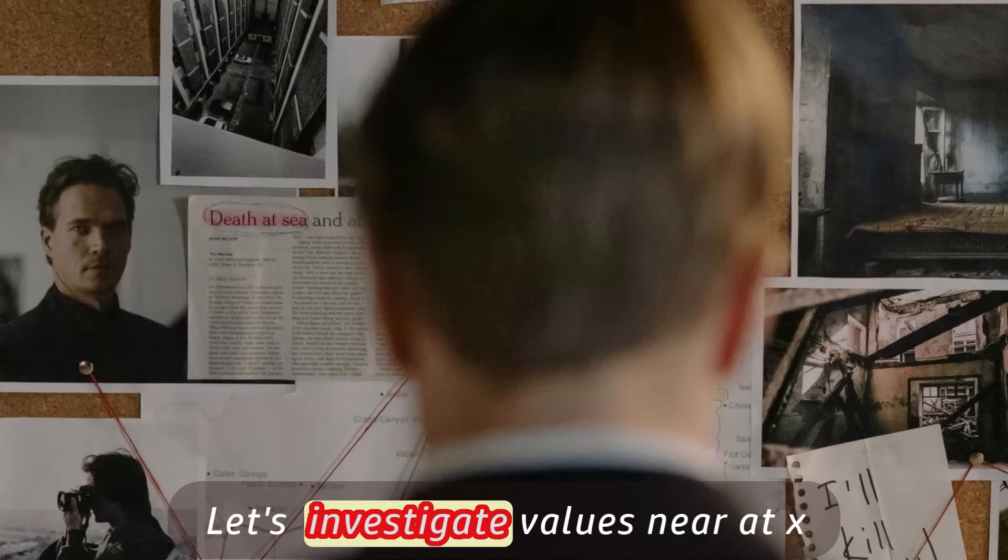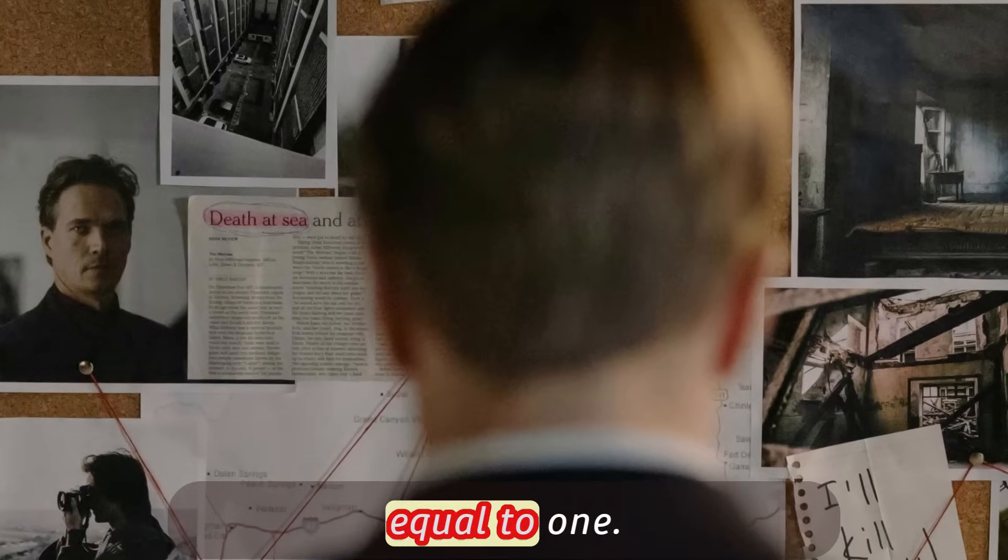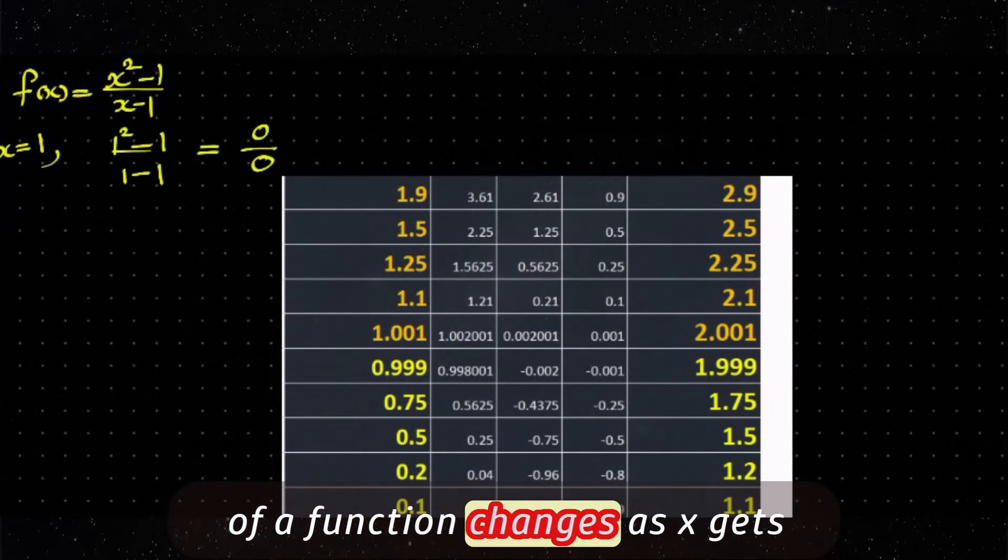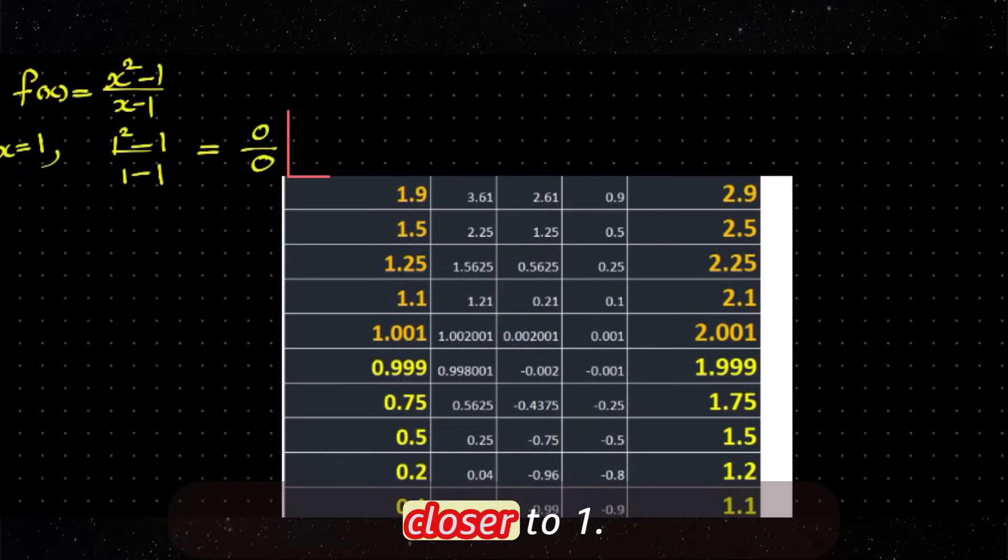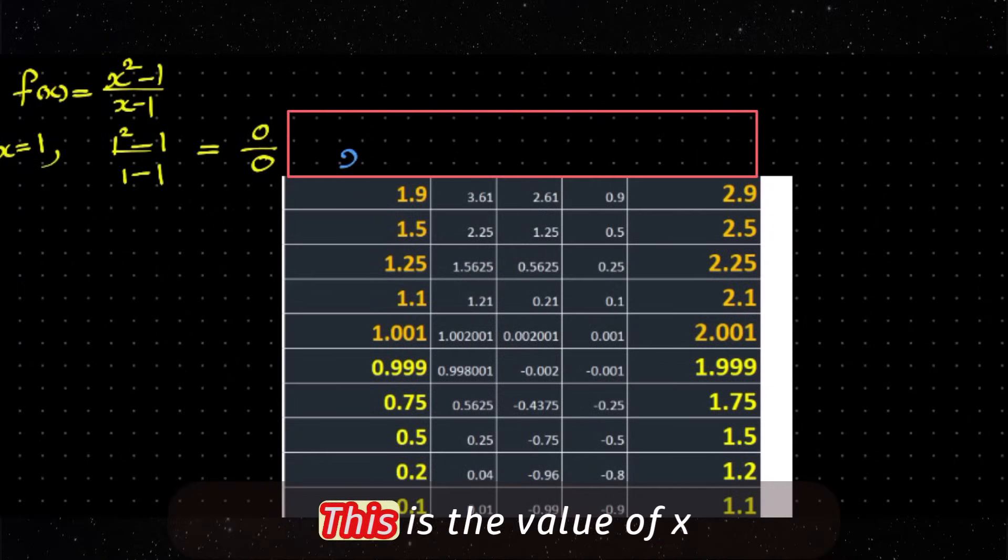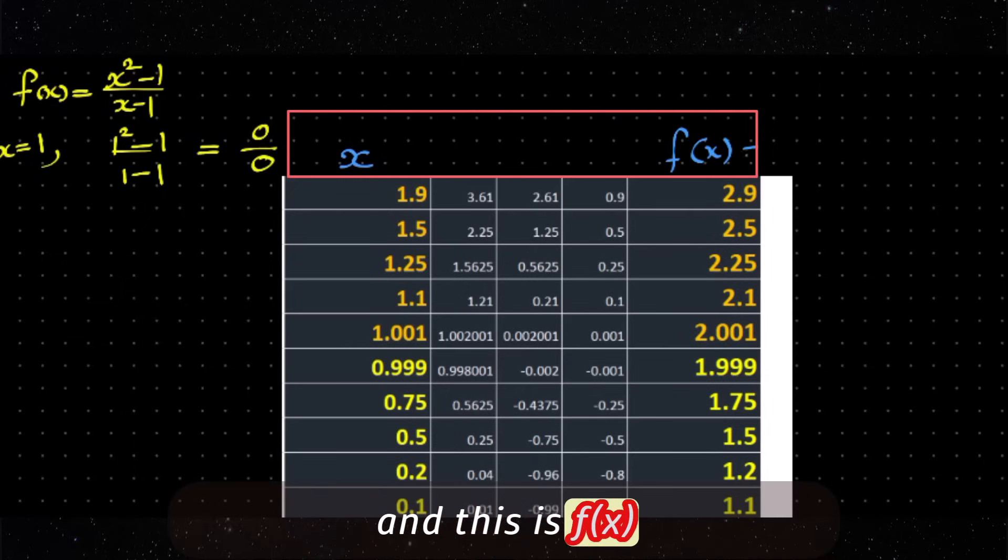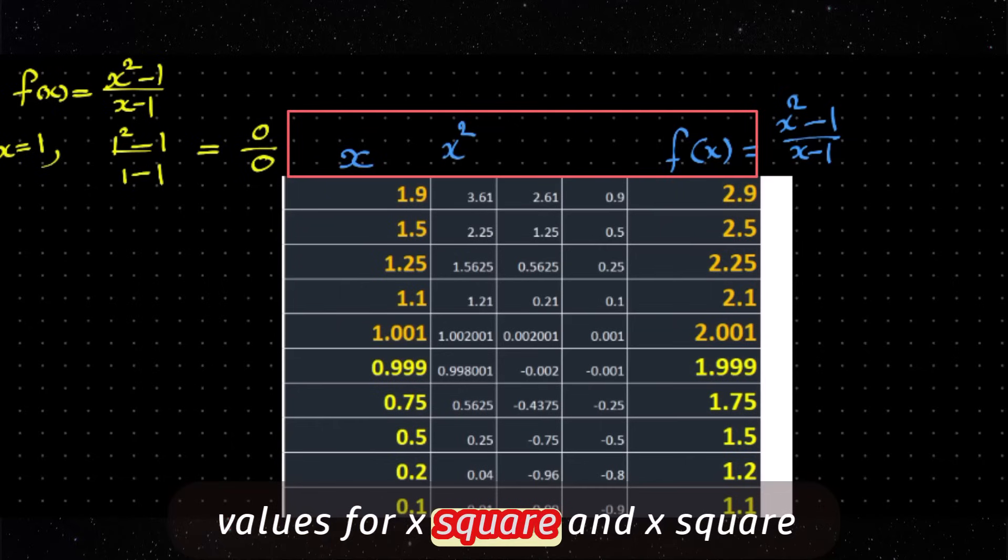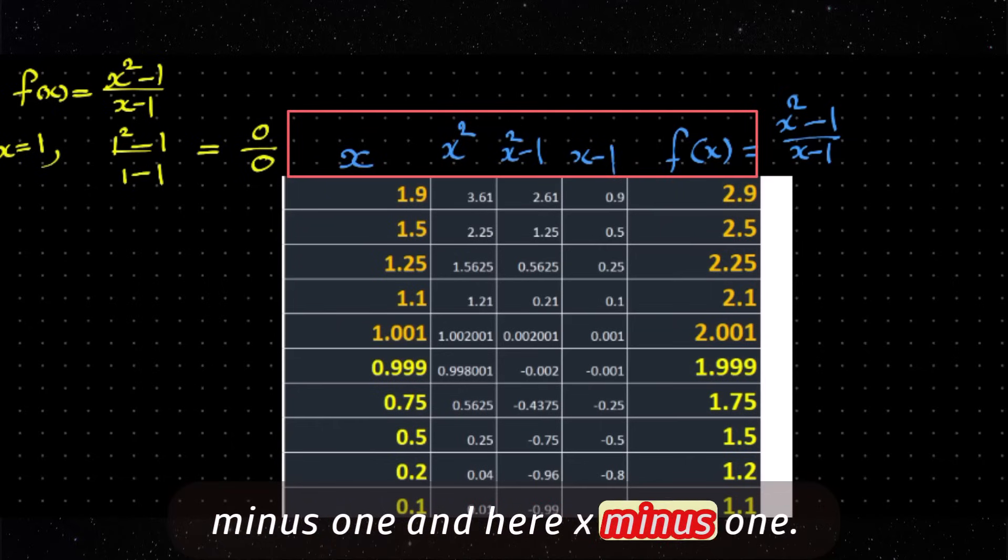Let's investigate values near x = 1. This table shows how the values of a function changes as x gets closer to 1. This is the value of x and this is f(x). And in between I have plotted values for x², x² - 1, and here x - 1.